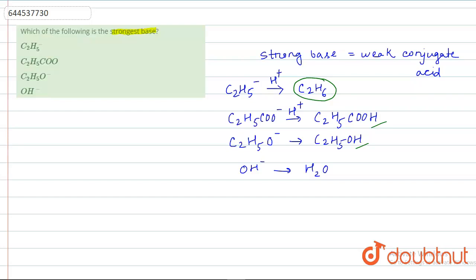be able to donate H+ ion easily. Why? Because the hydrogen here is forming covalent bonds, and that is why C2H6 or ethane will be the weakest conjugate acid among these four options. And that's why we can say